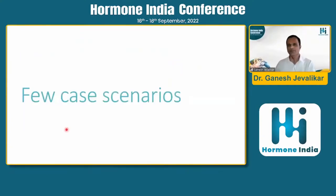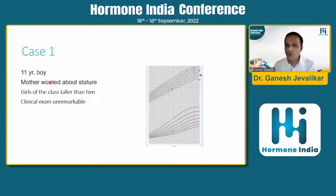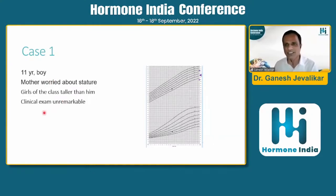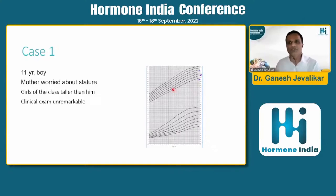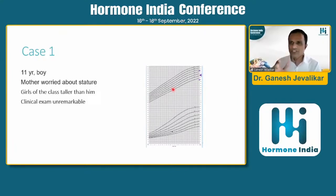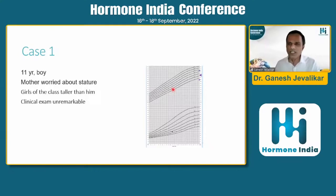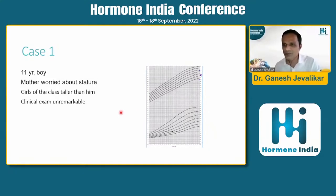A common OPD scenario: an 11-year-old boy whose mother is worried about short stature because girls in his class are taller than him. History and clinical examination are unremarkable. When the growth chart is plotted and height is within the mid-parental range, the child is totally normal. He needs reassurance, an explanation about the difference in pubertal timing between girls and boys, and does not need extensive tests, vitamins, hanging, stretching, or any other maneuvers people use trying to make their children tall.